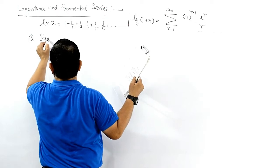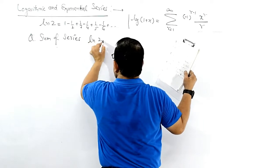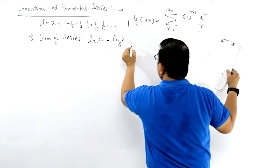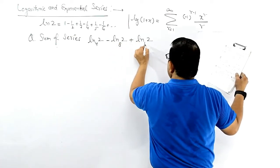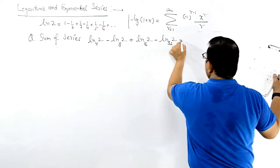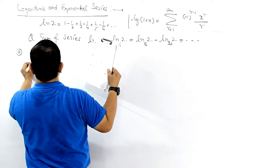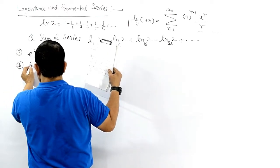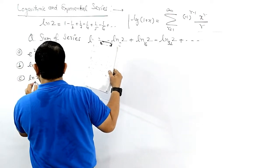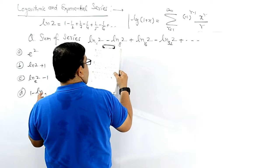Sum of the series: ln2(base 4) minus ln2(base 8) plus ln2(base 16) minus ln2(base 32) plus... और इसकी value दे रहा है: e square, ln2 plus 1, ln2(base e) minus 1, and option D is 1 minus ln2(base e).